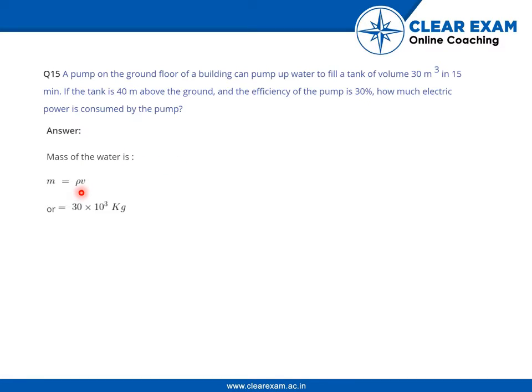Mass of the water is given by ρv, which is 30 into 10 to the power 3 kg. Thus the output power is given by work done by time, which is mgh by t. Now if we put the values, we get it to be 13.067 into 10 to the power 3 watt.